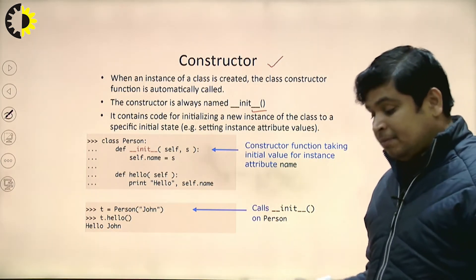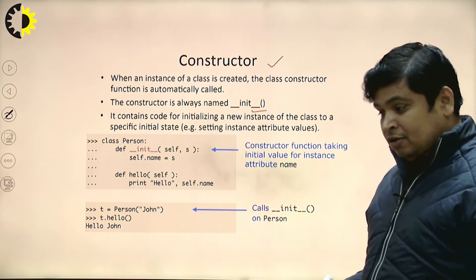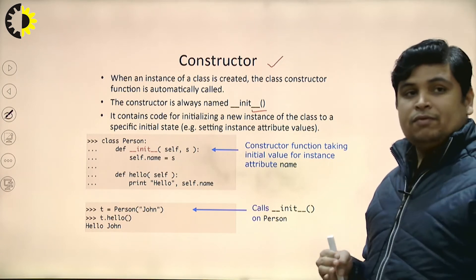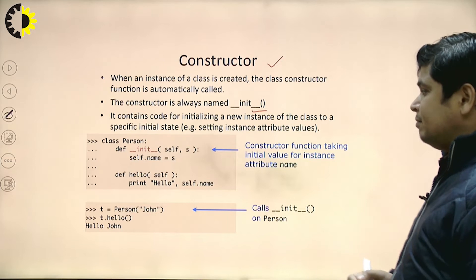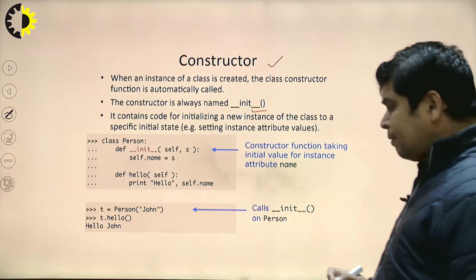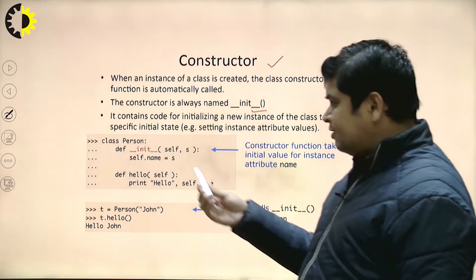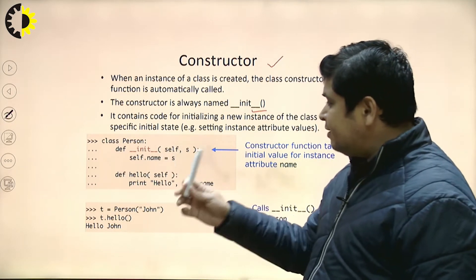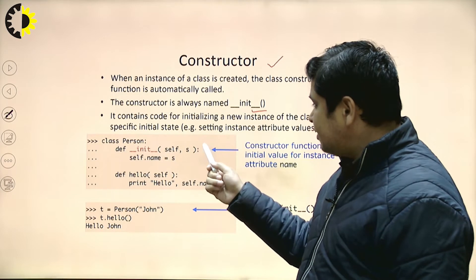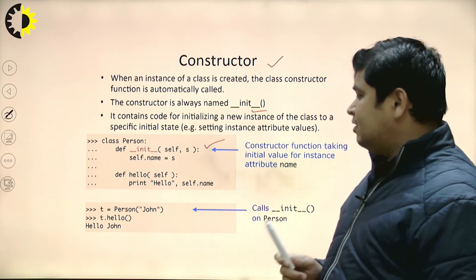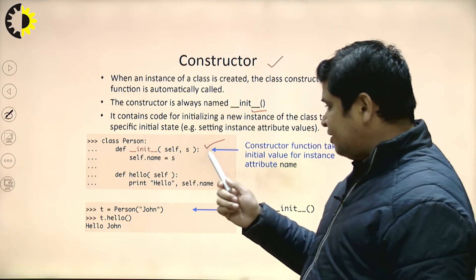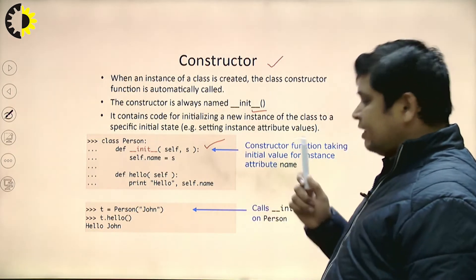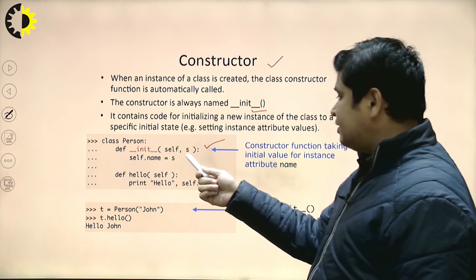Basically, what is the advantage of constructor? To reduce the length of code. You will see here — this is one class, the class name is Person, and inside this class this is the constructor. This constructor takes one argument: first argument is self and second argument is s.